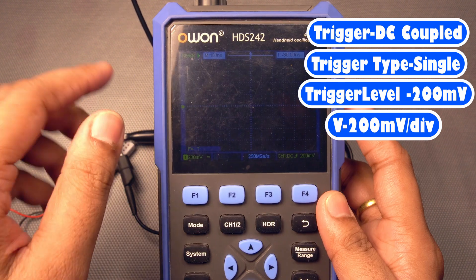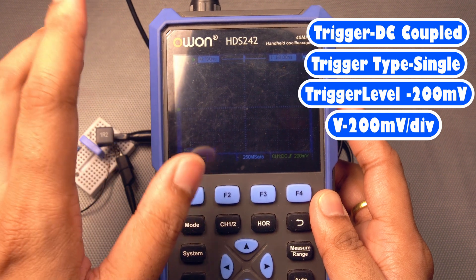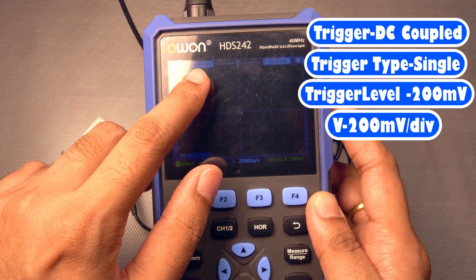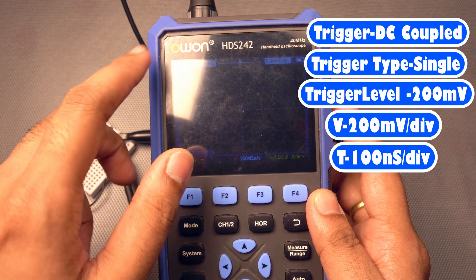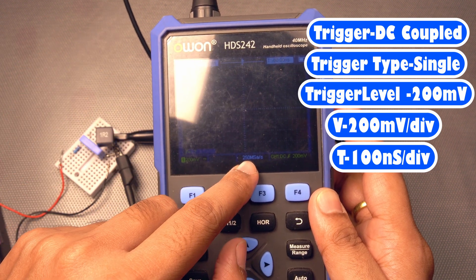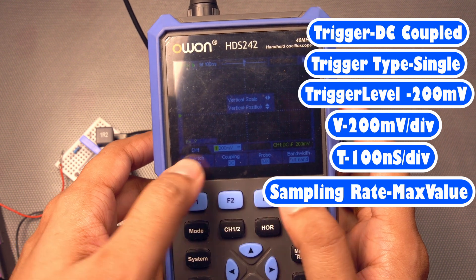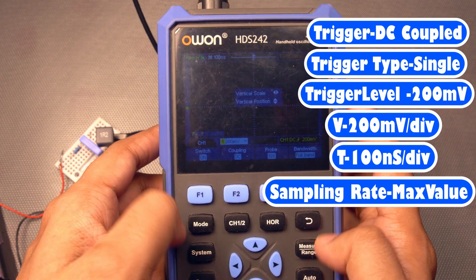Yeah, so you set your time base also to its almost to very low value. Like for me, per division is 100 nanoseconds now. So you set it to a very low value so that the sampling rate is at its highest or the peak value. And for channel one, it's at its DC coupling mode.